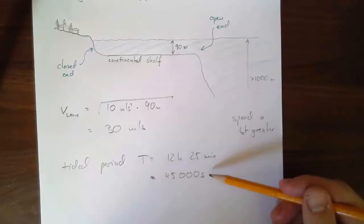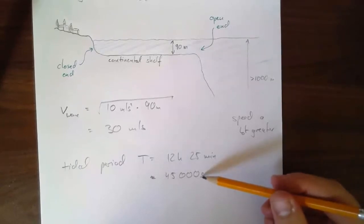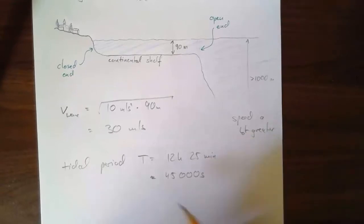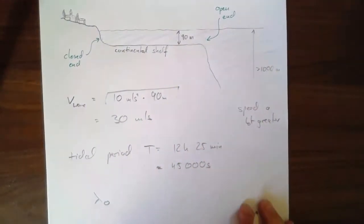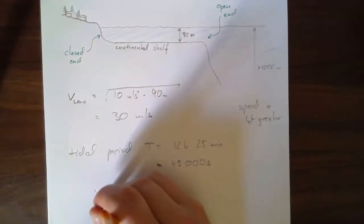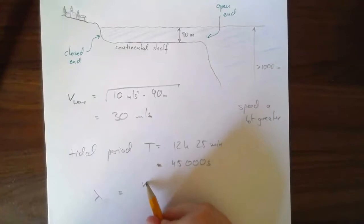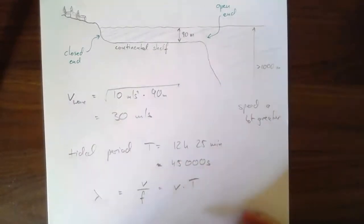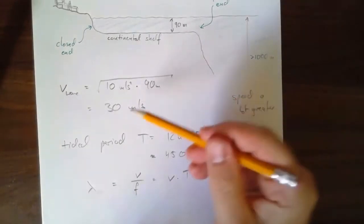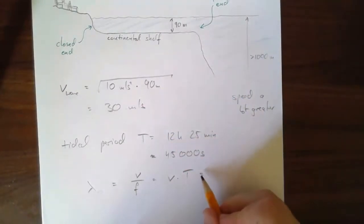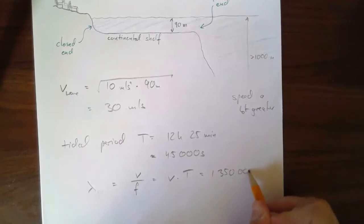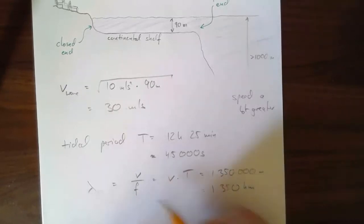So let's see what wavelengths would then form standing waves. Lambda would be V over F, which in this case, we've got a period, we're going to write V times T. So let's work this out, I'm going to plug in 30, I'm going to plug in 45,000, that comes to 1,350,000 meters, or 1,350 kilometers. That's the length of one of those waves in this case.